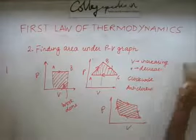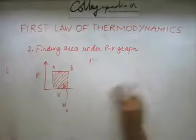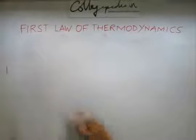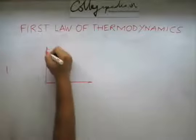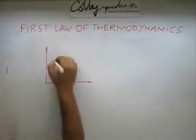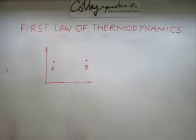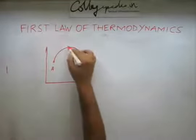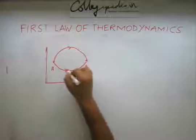Let us look at a small example. Say we have a curve on the PV graph. We have two states here, state A and state B. I have a process 1 going from state A to state B. I have another process which goes from state A to state B.